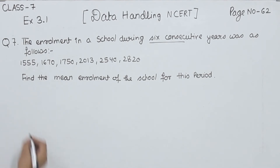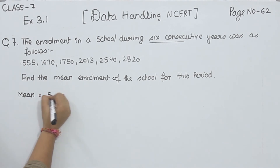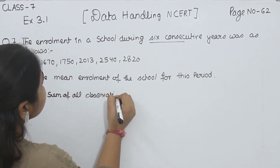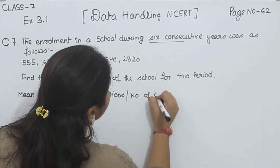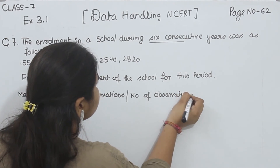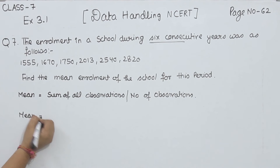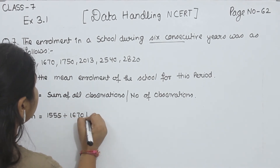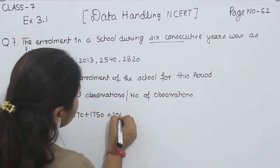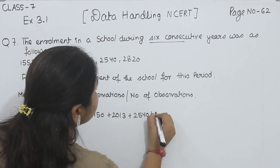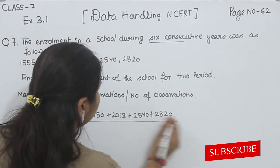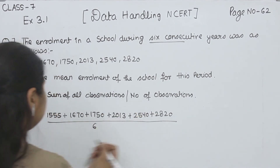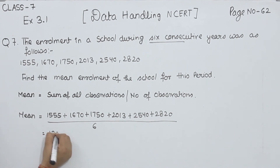So we have to find out the mean. Mean is equal to sum of all observations divided by number of observations. Mean is equal to 1555 plus 1670 plus 1715 plus 2013 plus 2540. The number of observations is 6 consecutive years — counting 1, 2, 3, 4, 5, 6 — so we divide by 6. The sum of these numbers is 12,348.